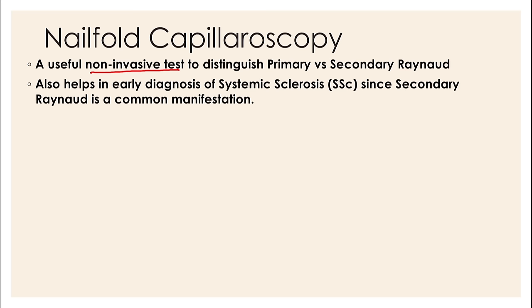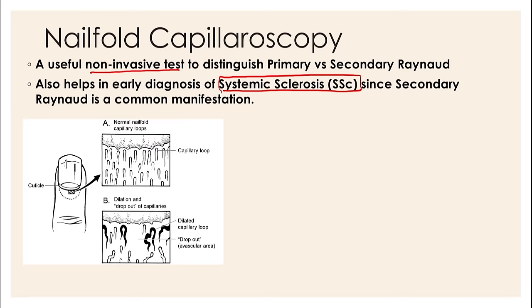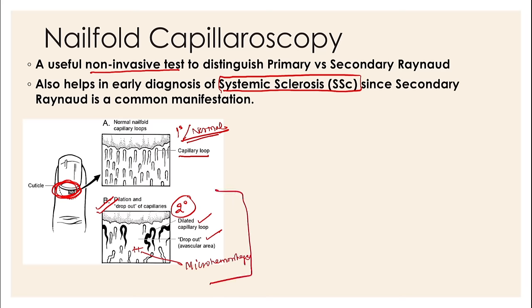Nail fold capilloroscopy also helps in the early diagnosis of systemic sclerosis, since secondary Raynaud's is the presenting manifestation in many patients. At the nail bed, we perform capilloroscopy and see how the capillary loops appear. In normal people the capillary loops are regular, parallel to each other, and dense. In secondary Raynaud's phenomena there will be dilatation of the capillary loops, missing capillary loops (dropout areas), and rarely micro-hemorrhages.